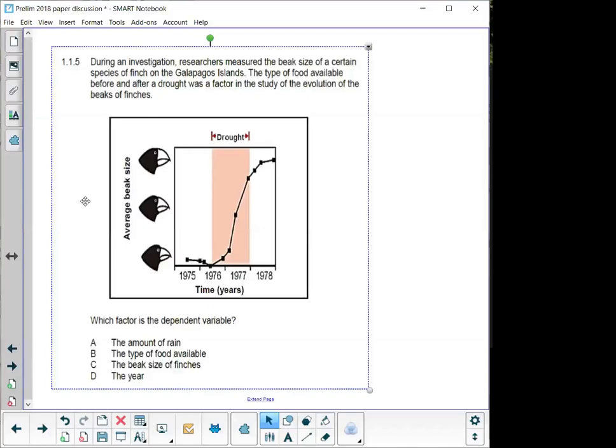Then I say to you, the type of food available before and after a drought. Now, a drought is typically what we call speciation. Changes in conditions, changes in conditions would cause a change in speciation, like a drought could cause speciation, because there's a change in environmental conditions. So, the type of food available before and after a drought was a factor, so there was a change in conditions, in the study of evolution and the beaks of the finches. Then they only ask you in this specific question, which factor is the dependent variable?